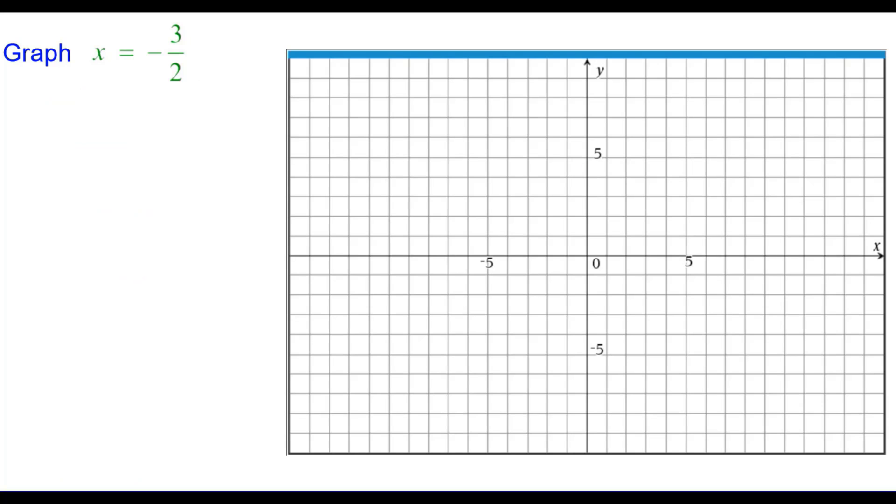Let's look at the graph x equals negative 3 halves. Here the constant is negative 3 halves. We need to create two ordered pairs with an x coordinate of negative 3 halves.